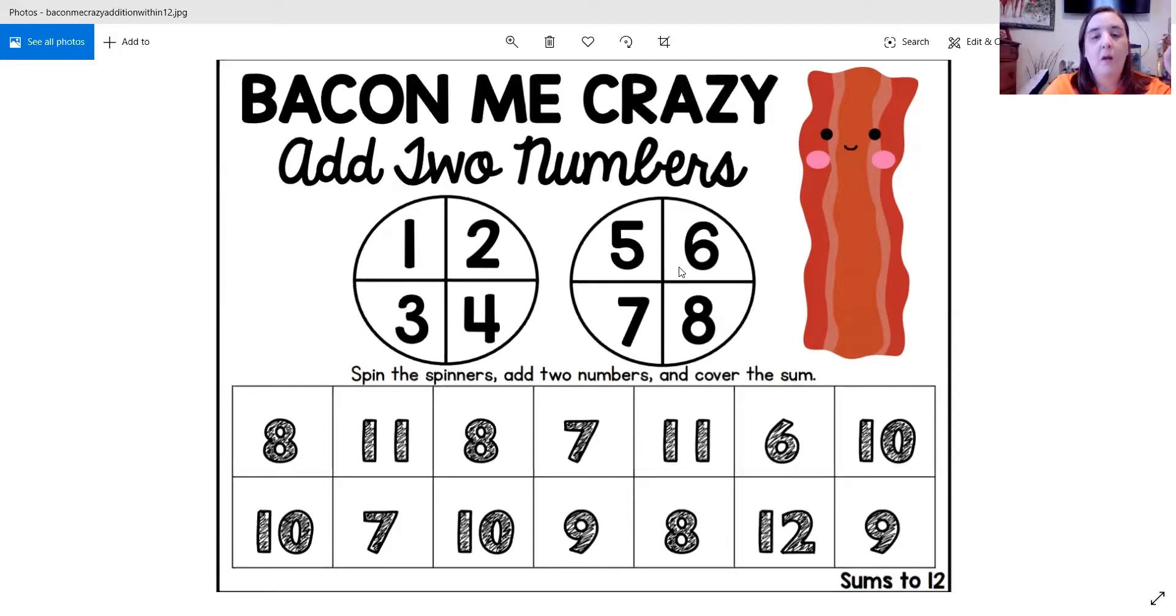Okay, so then I would have to say, what's my equation going to be? 2 plus 7 equals...down here on the bottom are all your sums.